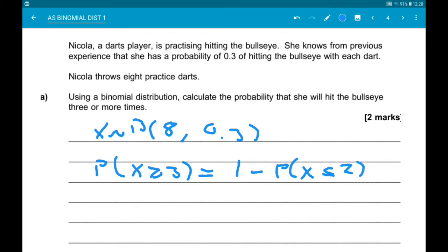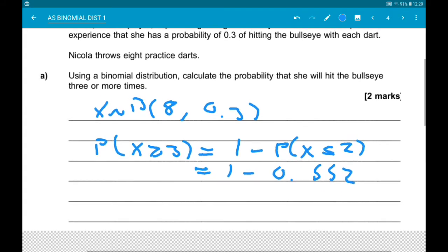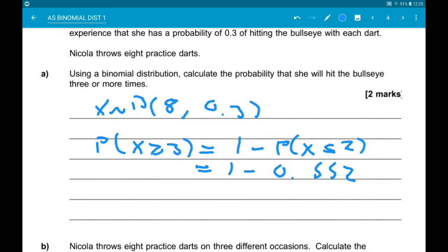So what we don't want is the probability x is less than or equal to 2. Now use your calculator to get that probability, and we should get 0.552. So we have 1 minus 0.552, and then that finally gives us 0.448. With probabilities, it's always a good idea to give three sig figs.